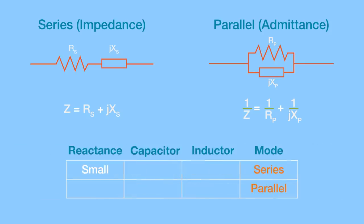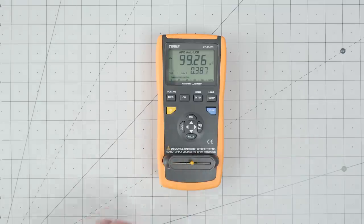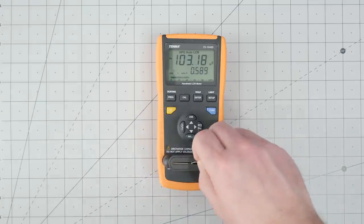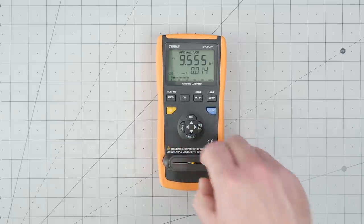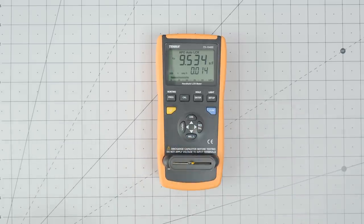In summary, for a small reactance, which is a large capacitor or small inductor, use series mode. And for a large reactance, which is a small capacitor or large inductor, then use parallel mode. Sorry, that is the best way I can simplify that concept. I did want to mention that this meter tries to help. When it is in auto, it selects series or parallel based on the component's value. For now, let's talk about a simple but useful measurement for a handheld LCR meter.